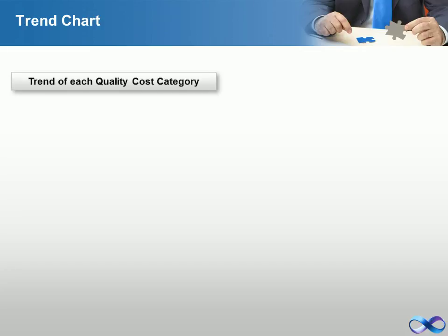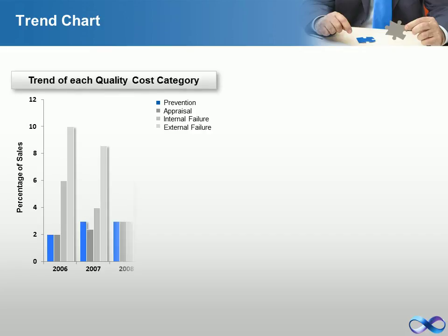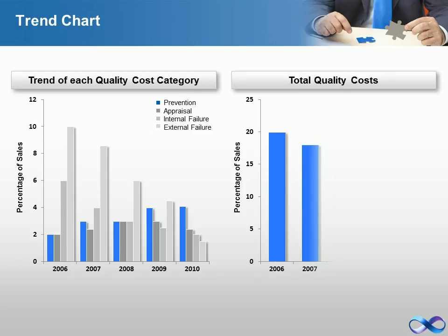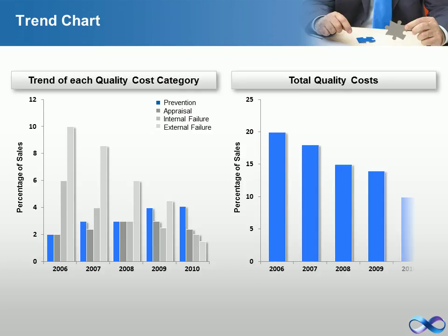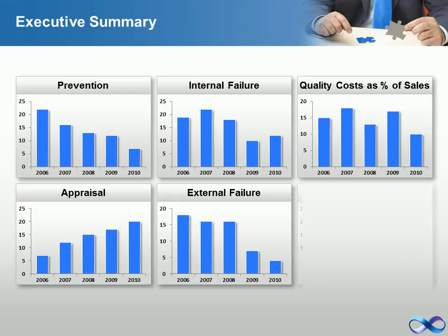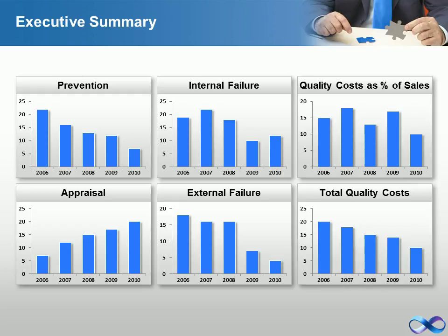This report analyzes the overall trend in the quality program by showing the total of quality costs as a percentage of sales against time, and the total of quality costs for each category as a percentage of sales. The quality cost report is an executive summary report showing the trend of all cost categories and summaries.